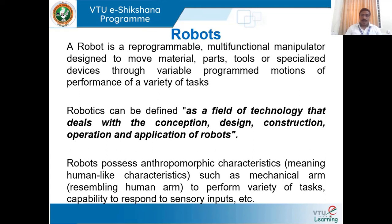The same robot can do turning, drilling, milling, painting, and graining operations — multiple operations can be performed by one single robot. That is the reason it is called a multifunctional manipulator. Every time you give a task to a robot, after delivering that task the robot can be reprogrammed for a new task. This gives the meaning of reprogrammable.